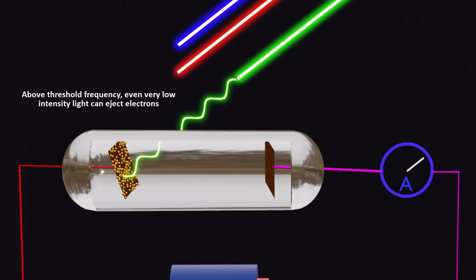If the frequency is above the threshold, even very low intensity light can immediately cause the ejection of photoelectrons.